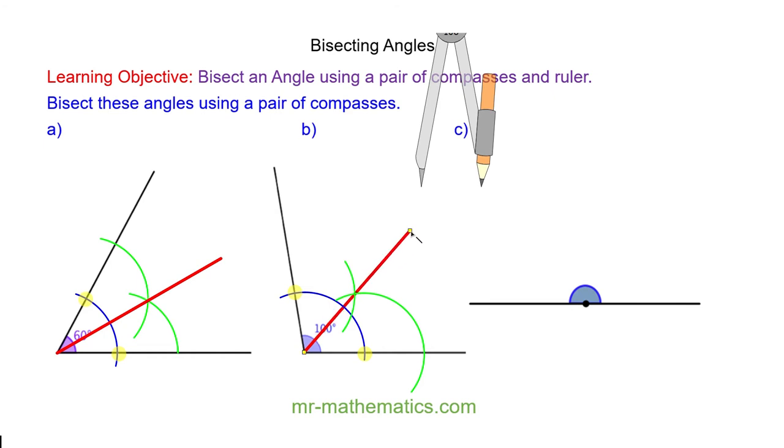So I have bisected this 100 degree angle into two 50 degree angles.